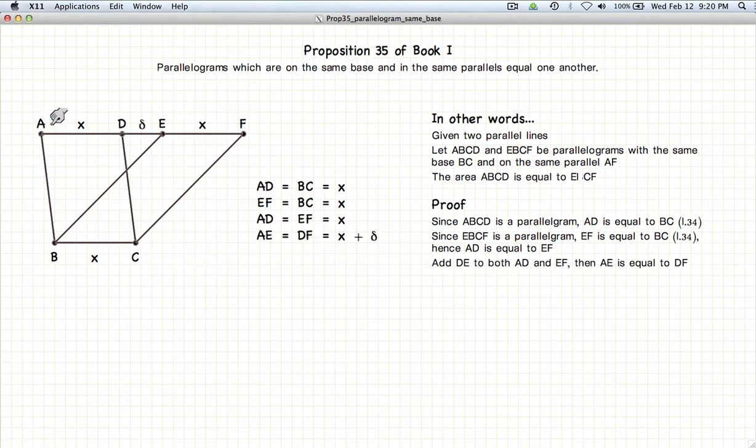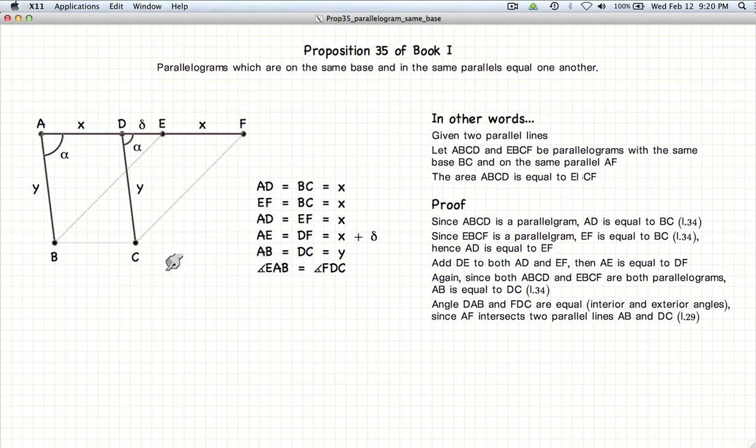Now if we look at the line AE, which is equal to x plus delta, that is going to be equal in length to line DF, which is also equal to x plus delta. The line AB and DC are equal in length because they are the opposite sides of a parallelogram, according to Proposition 34. Now the angles DAB is going to be equal to the angle EDC because these two lines are parallel. This is all according to Proposition 29.